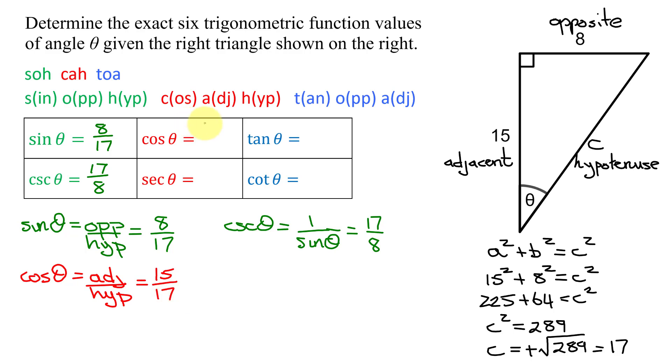Next, its reciprocal, the secant of theta is 1 over the cosine of theta. The reciprocal of 15 over 17 is 17 over 15.